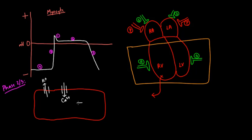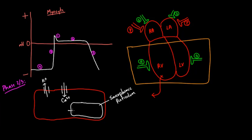When that calcium comes in, there's a sarcoplasmic reticulum — essentially a bag of calcium — that waits for a little calcium to bind to its channel. The moment it does, it starts letting calcium out into the cytoplasm of the cell. So in phase two and three, calcium is rushing in from outside, the sarcoplasmic reticulum is dumping calcium into the cell, and potassium is leaving the cell entirely.